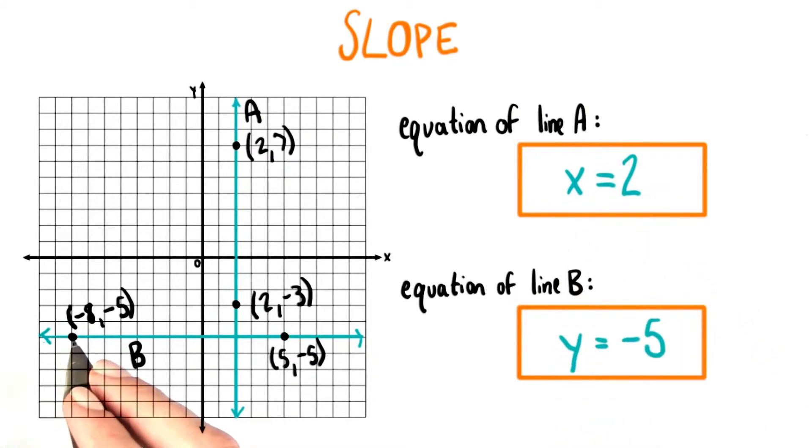We said that every point along a horizontal line has the same y value. Its x values go from negative infinity to positive infinity, but the only equation that accurately describes every point along the line is y equals negative 5.